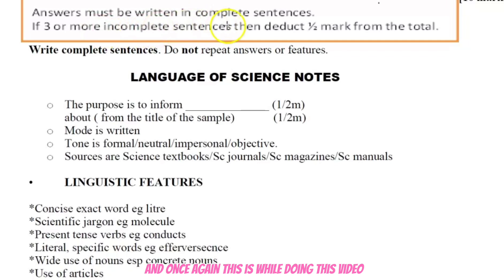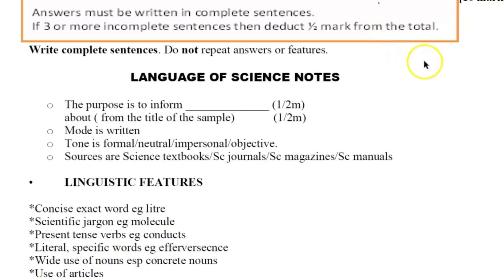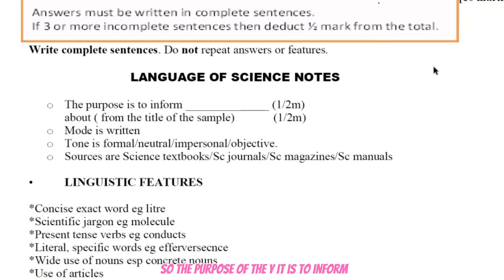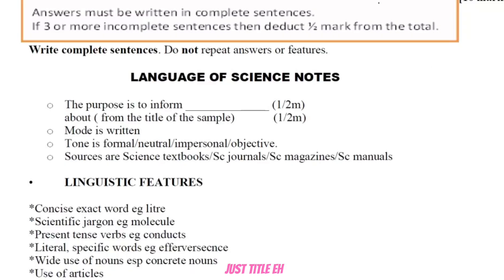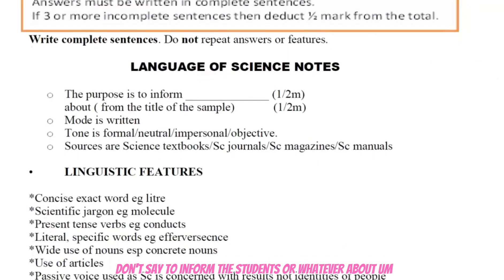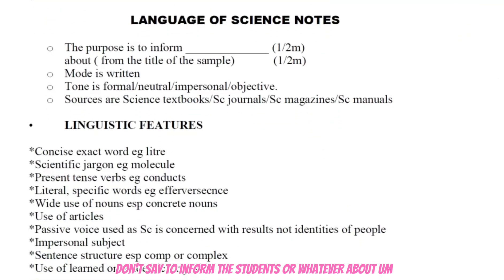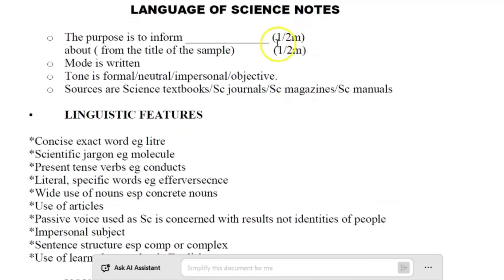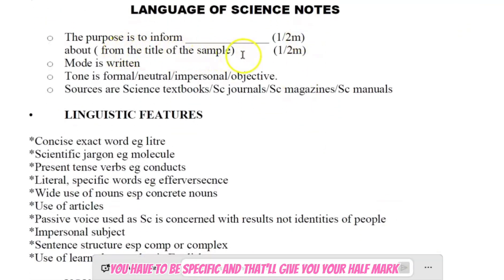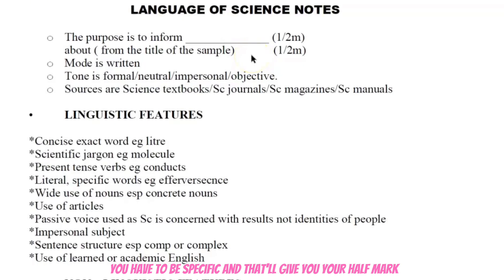We are months away, so you have enough time to practice. The purpose — the 'why' — is to inform. That is half a mark. You must be specific about what it informs about, not just say 'to inform the students.' Being specific earns your half mark. The mode is how the text is given to you, which is usually written.